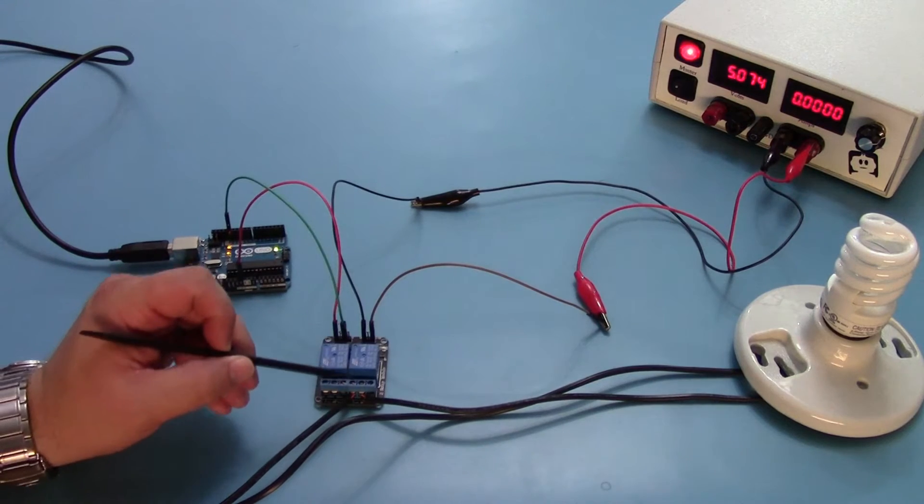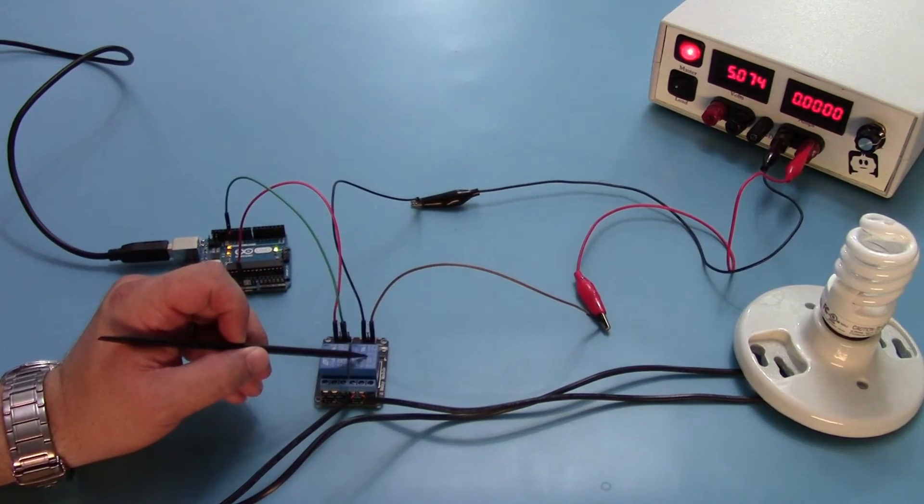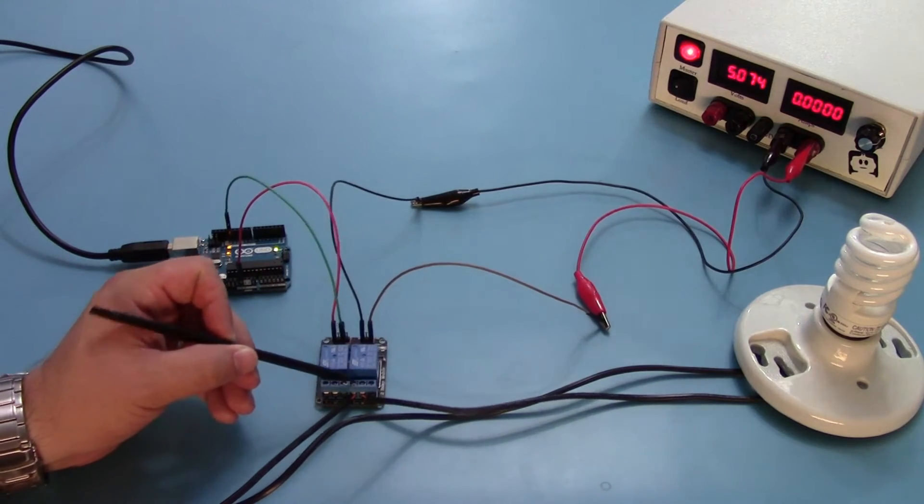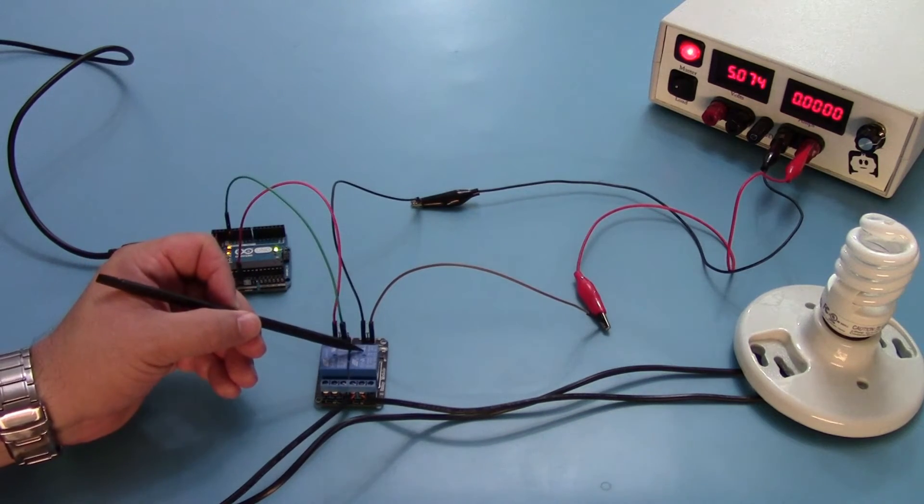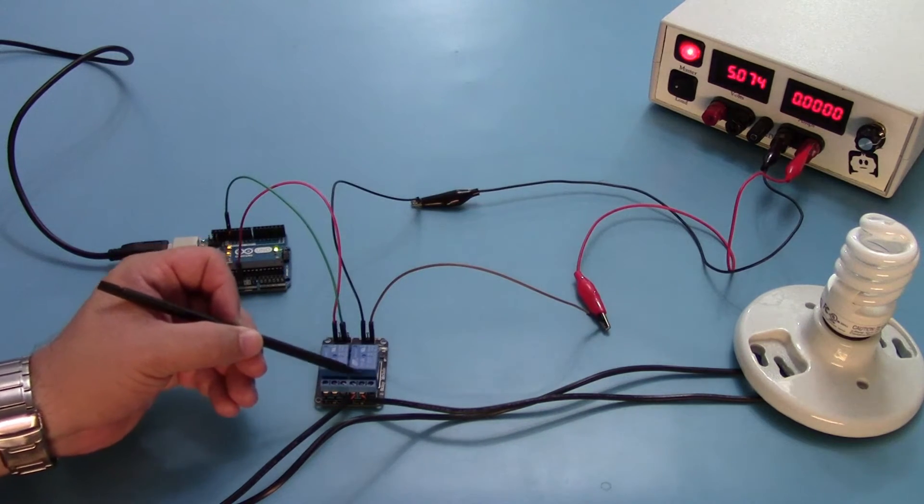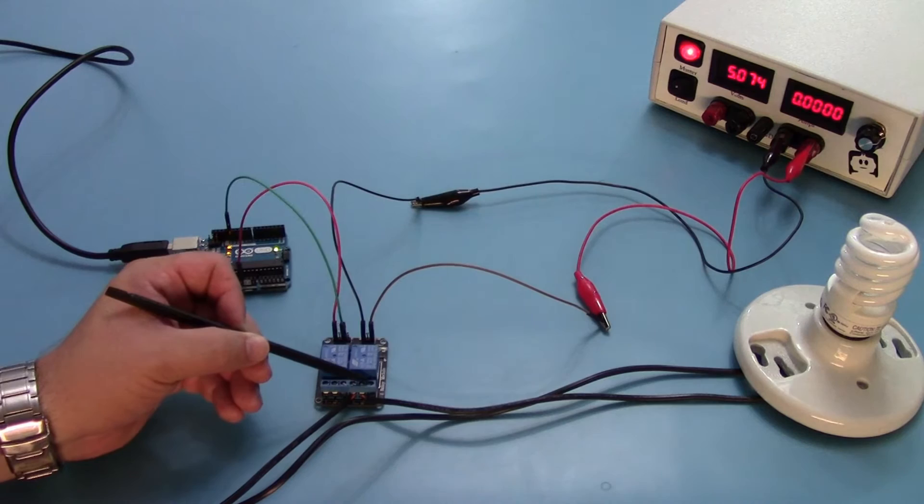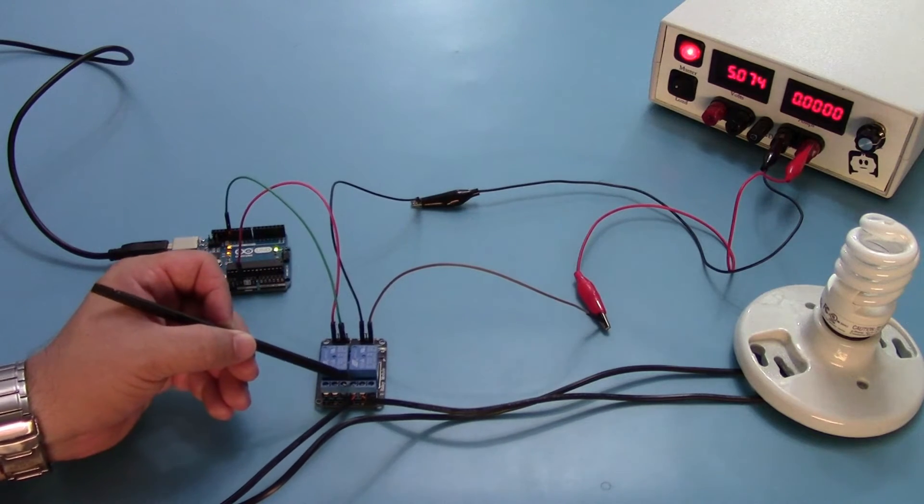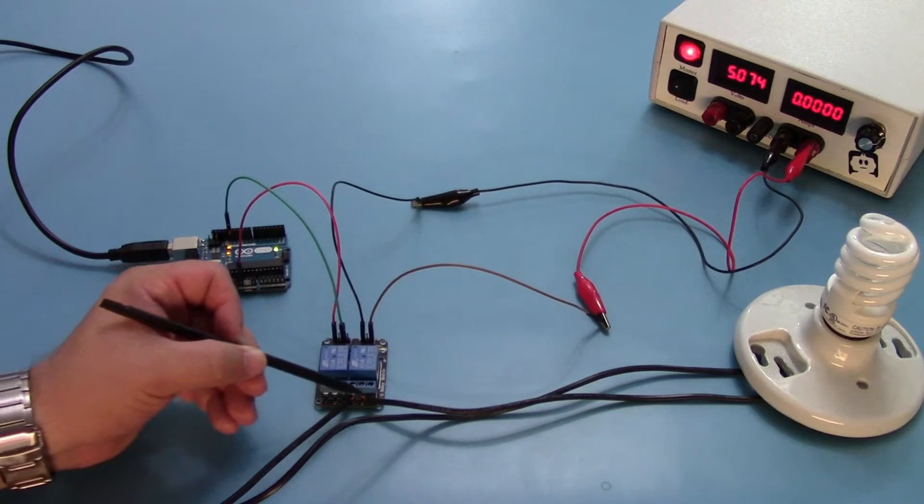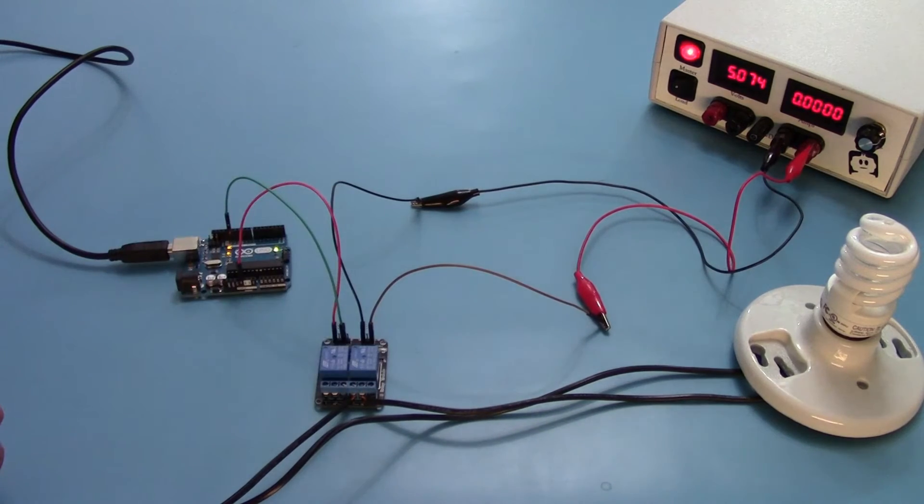Now what this is allowing me to do is that when this relay is off and it's not active and you see that the LED is not on, there is no electrical connection between these two. Now when we activate this relay, it's then going to switch from these two being electrically connected to these two being electrically connected. And then that's going to create our circuit and ultimately turn the light on.